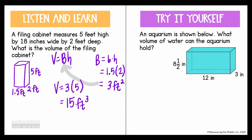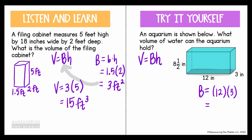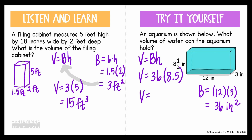Go ahead and pause the video and try the exact same process with the next question. An aquarium is shown below — what volume of water can the aquarium hold? We're looking at this same type of problem: a rectangular prism. Volume equals the area of the base times the height of the prism. I'm going to find the area of the base — if it helps you to highlight or shade the base, I always like to do that as well. The base is 12 inches by 3 inches, which gives me 36 inches squared. Going back to my original equation: the area of the base is 36 inches squared, and the height of my aquarium is 8½, which I can represent as 8.5. So the volume of my aquarium is 306 inches cubed.